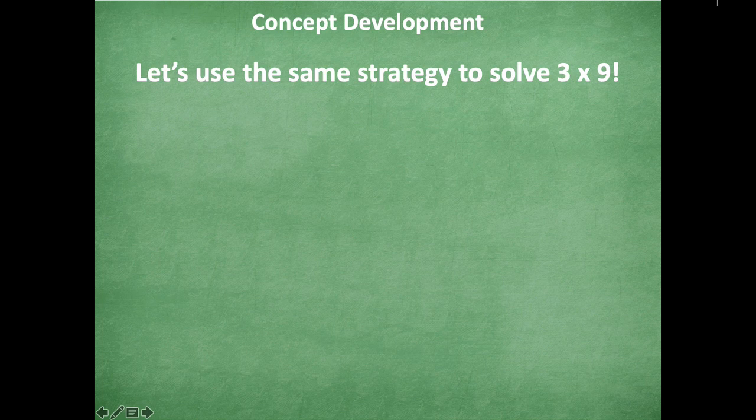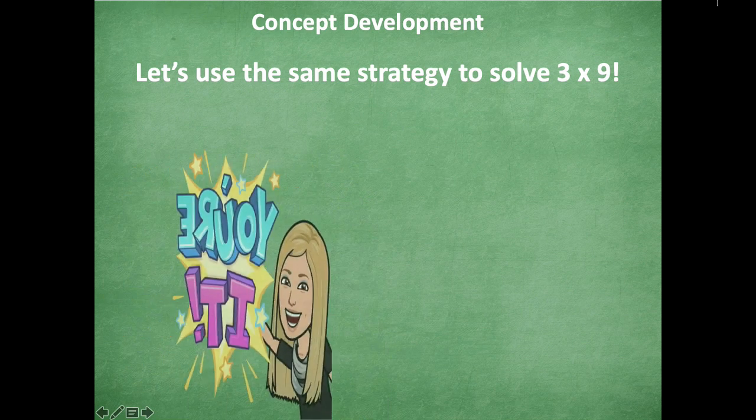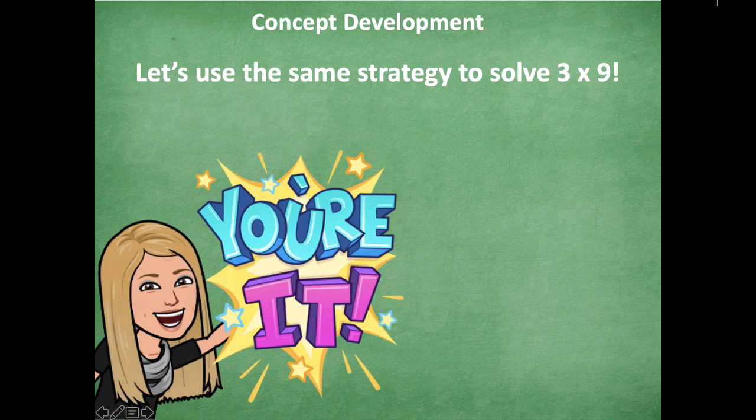So let's look at another one. We're going to use the same strategy to solve 3 times 9, but this time I want you guys to try it. So go ahead and draw your array of 3 times 10, and then take away some of those to model 3 times 9. So go ahead and try that and click play when you're ready to go over it together. If you're still a little stumped, it's okay. We're going to work on it together.